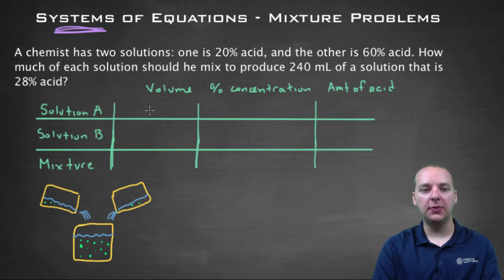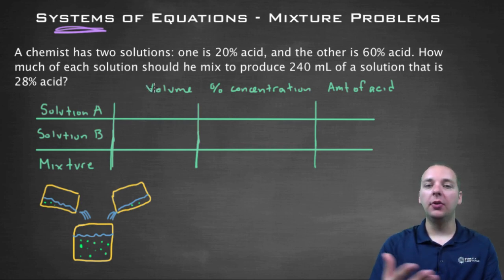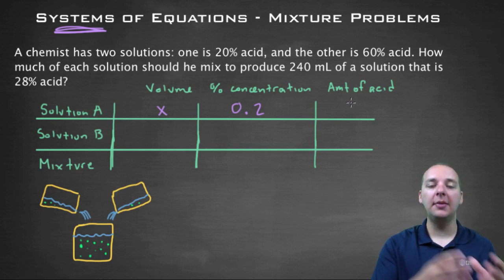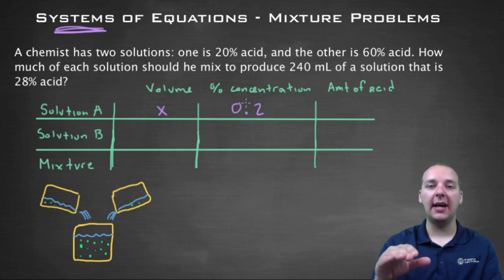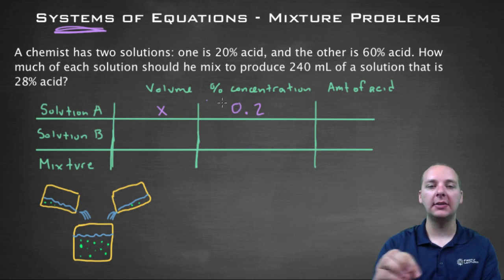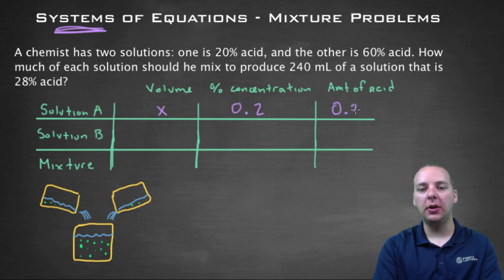Let's start with solution A. How much of solution A do we have? I don't know, the only volume I see is 240 milliliters, but that's of the whole thing. So if I don't know, we'll call this X. The concentration for solution A is 20%, but we'll write that as a decimal, 0.2. And the amount of acid will be the volume that we have times the concentration. So if it was 100% acid, you'd multiply it times 1 and the whole volume would be acid, but ours is just 20% acid. So when you multiply these, you'll get 0.2X. That's the volume of just acid that we have in solution A.